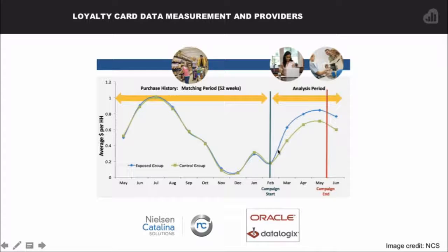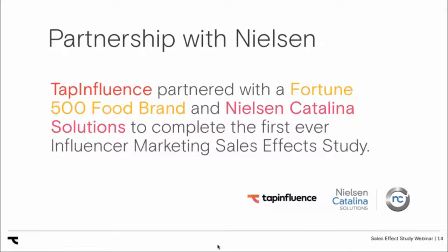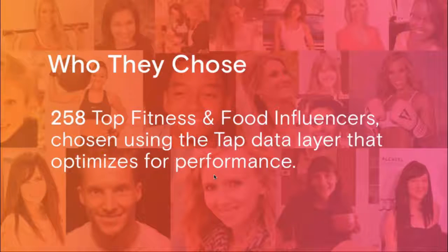We then compare the exposed person to the control group going forward and look for an increase in purchases — that's your return on investment. To do this, you need a partnership with a loyalty card matchback provider. The two leading providers right now are Nielsen Catalina Solutions and Oracle through their acquisition of DataLogix. Tap Influence is partnered with both. We partnered with Nielsen Catalina Solutions to do this for the very first time in the influencer marketing space.